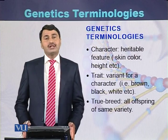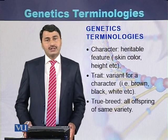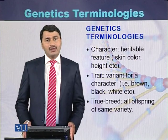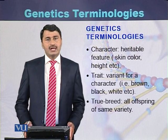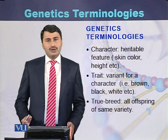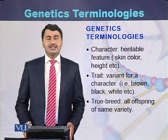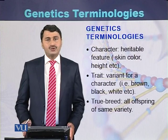What is true breed? If all the offspring produced are of the same variety — like tall plants will produce tall offspring and short plants will produce short plants — those varieties are called true breeds.